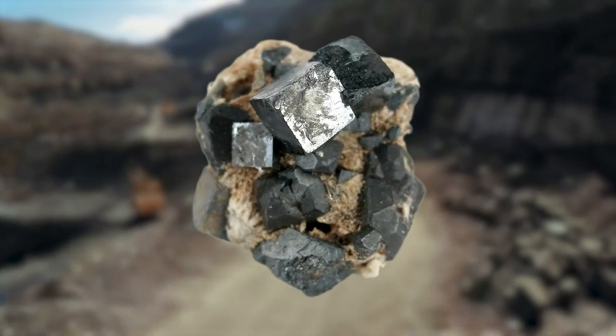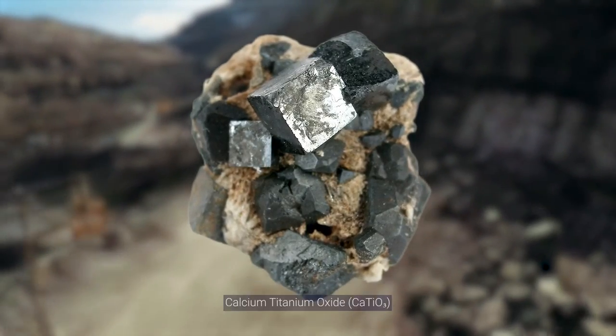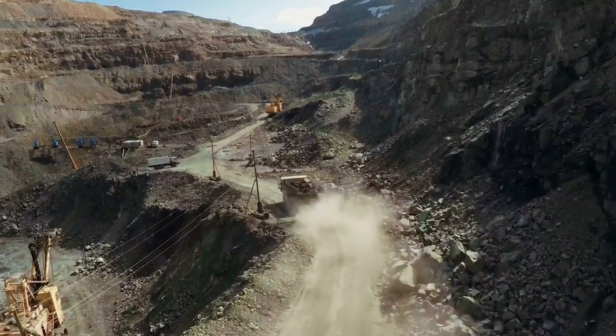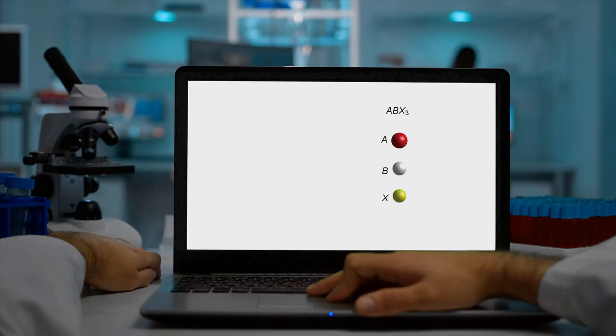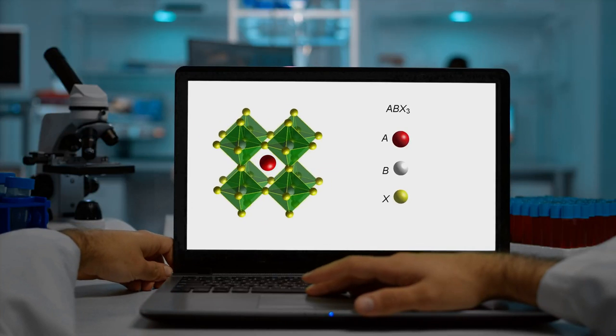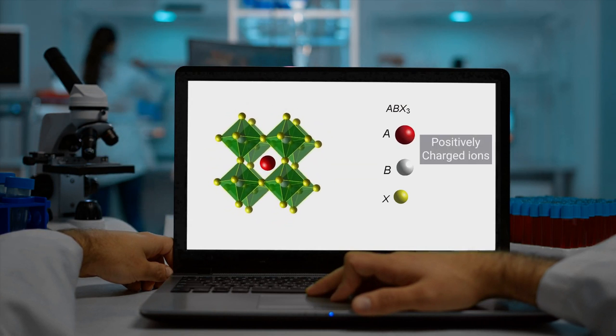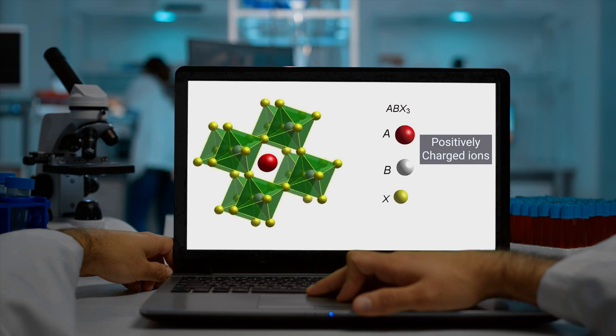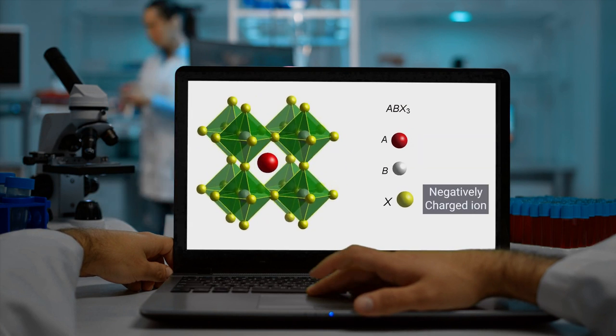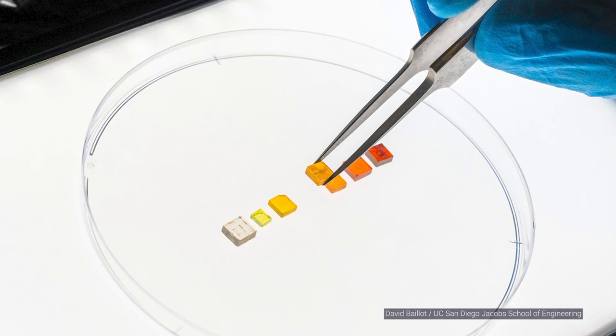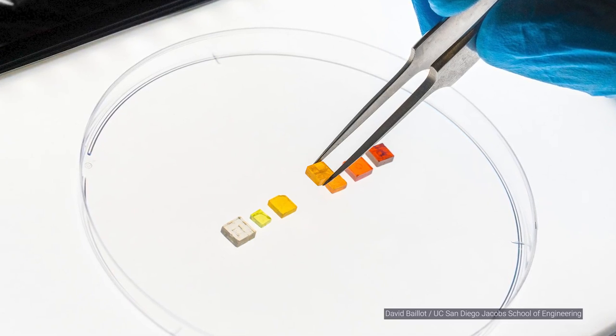The perovskite crystal structure was first discovered as the naturally occurring mineral calcium-titanium oxide. But the perovskites used in solar cells don't need to be mined from the Earth. A perovskite is any material with a crystal structure following the formula ABX3, where A and B are two positively charged ions, often of different sizes, and X is a negatively charged ion. Scientists realized that they could create a diverse range of man-made perovskite crystals following this same arrangement that have very useful properties.